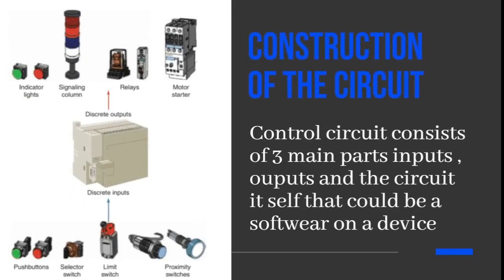So what is the construction of this circuit? The control circuit consists of three main parts: inputs, outputs, and the circuit itself. This circuit could be a software program stored on a device like a computer, or it could be a real physical circuit connected with motors, relays, and other components, which we will explain later.